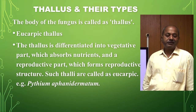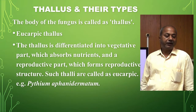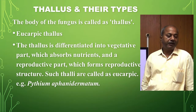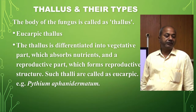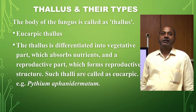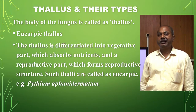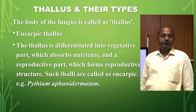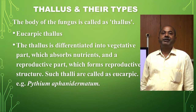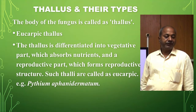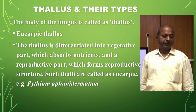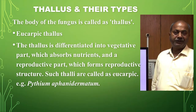In eucarpic thallus, the thallus is differentiated into a vegetative part which absorbs the nutrient and a reproductive part which forms the reproductive structure. When the vegetative structure absorbs the nutrient and a part of it forms the reproductive structure, it is called eucarpic. The example is Pythium aphanidermatum.